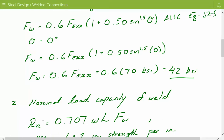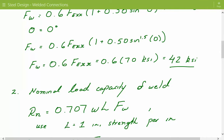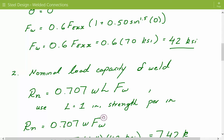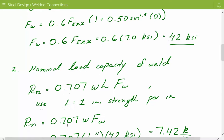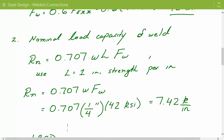The next step is to calculate the nominal load capacity of the weld. The equation is: 0.707 times the weld size, times the length of weld, times the nominal strength of the weld. For simplicity, we assume L equals 1 inch to get strength in kips per inch, then convert at the end. So: 0.707 times one-quarter inch times 42 KSI gives a nominal load capacity of 7.42 kips per inch.